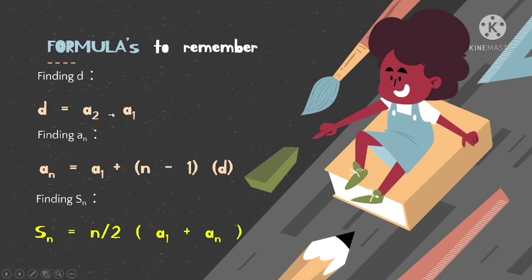For the common difference, the formula is d equals a sub 2 minus a sub 1. For finding a sub n, the formula is a sub n equals a sub 1 plus n minus 1 times d. And for the partial sum, s sub n equals n divided by 2 times a sub 1 plus a sub n.